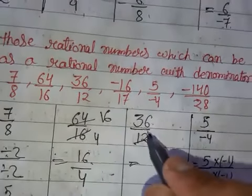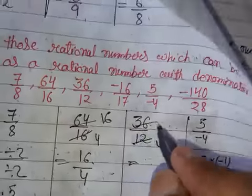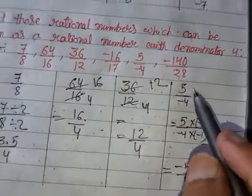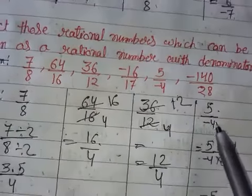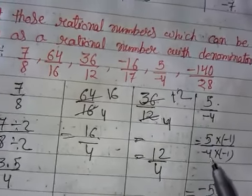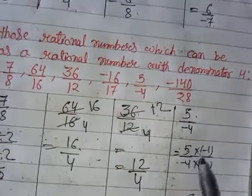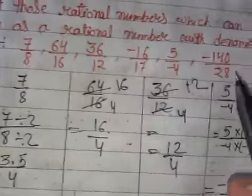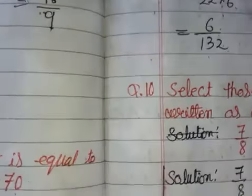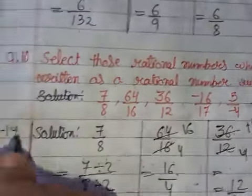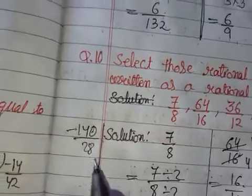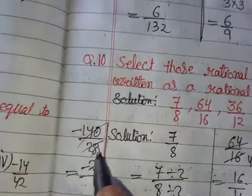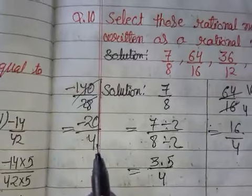For 36/12, divide by 3: 12 divided by 3 is 4, giving denominator 4. For -5/4, since the denominator must be positive 4 (not -4), we multiply by -1/-1 to get -5 over positive 4. For -140/28, divide by 7: 28 divided by 7 is 4 and 140 divided by 7 is 20, giving -20/4 — denominator is 4.